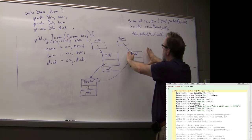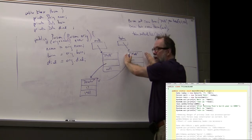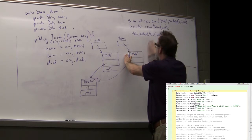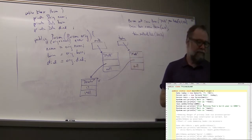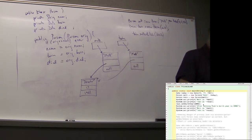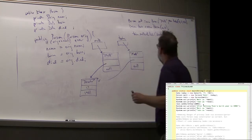So when twin.setBirthYear is executed, we go to twin's born field, which points to the same Date object as Matt's born field, and change the year there — affecting both Matt and twin. This is exactly the privacy leak problem we need to solve using a proper copy constructor.